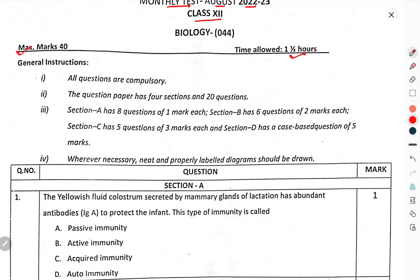General instructions: all questions are compulsory. The question paper has 4 sections and 20 questions. Section A has 8 questions of 1 mark each. Section B has 6 questions of 2 marks each. Section C has 5 questions of 3 marks each, and Section D has a case-based question of 5 marks.